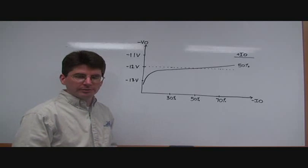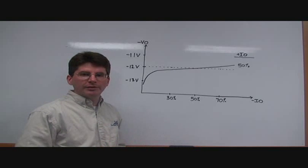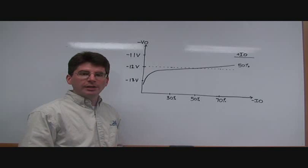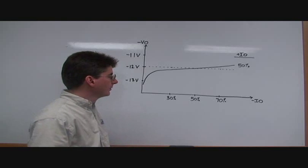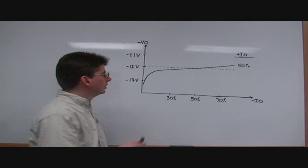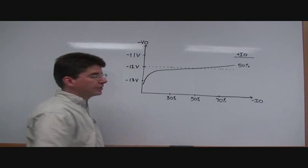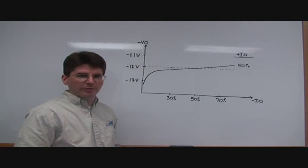For the balanced load condition, when both outputs have the same load on it, the negative output will be well regulated. So in this graph we show, on the vertical axis, we show the negative output voltage. On the horizontal axis, it shows the negative output current.